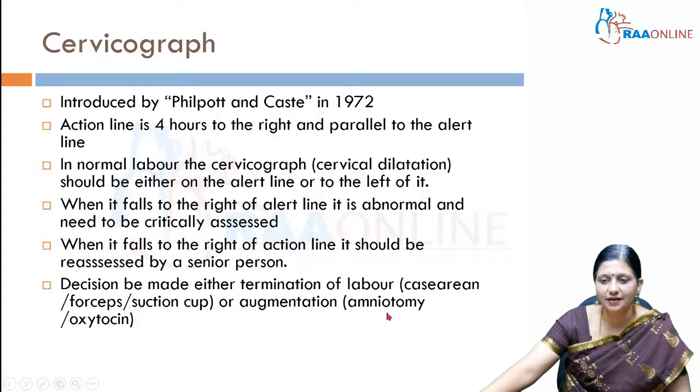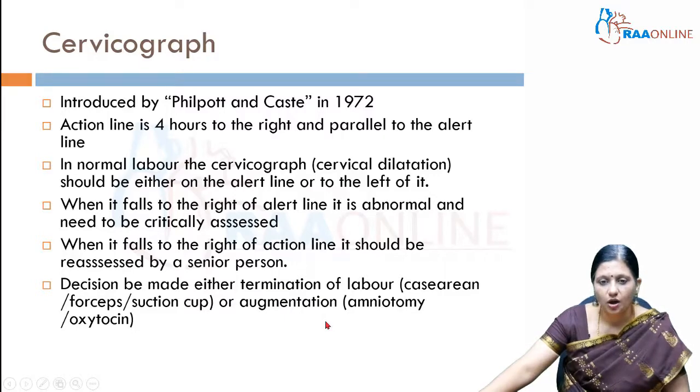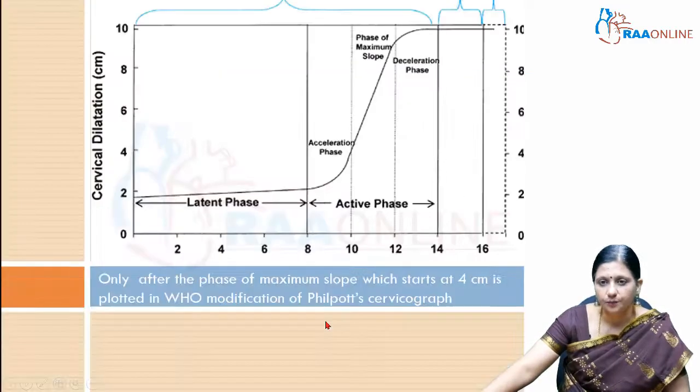Augmentation of labor can be done by artificial rupture of membranes, which is called amniotomy. Another method of augmenting labor is to start oxytocin.